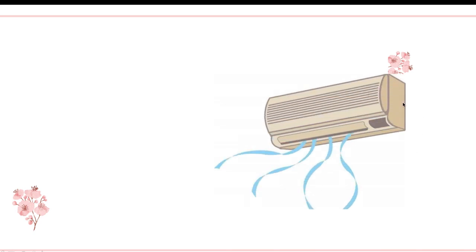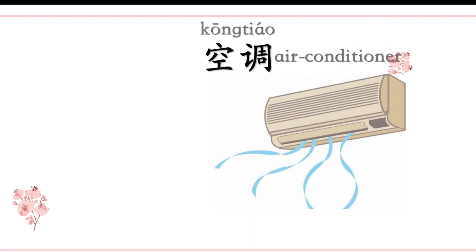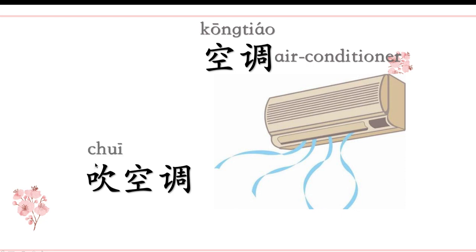What's this? 这是什么? It's an air conditioner — 空调. 这是空调. We say 吹空调 — to use the air conditioner, literally 'blow the wind from the air conditioner.' 在夏天，人们经常吹空调 — people turn on the air conditioner in summer.